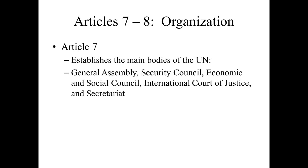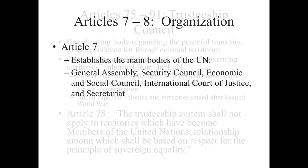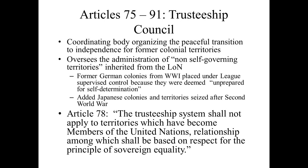Moving on — there are a number of articles within the Charter. Articles 7 and 8 lay out the organization — things we've already talked about last week. Article 7 establishes the function of the General Assembly, the Security Council, the Economic and Social Council, the International Court of Justice, and the Secretariat. I want to spend some time talking about each one.